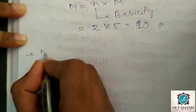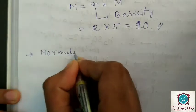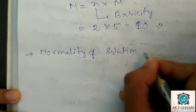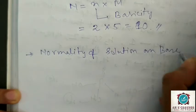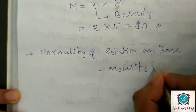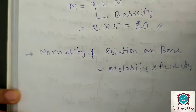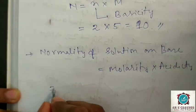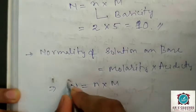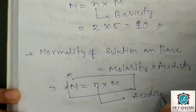Now for a base, what will the normality be? For a base, normality equals molarity multiplied by acidity. The formula is still N = n × M, but here n stands for acidity.